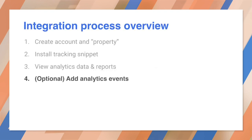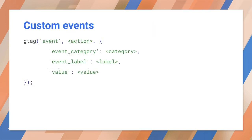The answer is to create your own custom analytics events corresponding to actions in the app. Google Analytics supports custom events that allow fine-grained analysis of user behavior. This code uses the gtag command, which is defined in the tracking snippet.